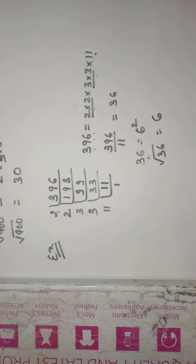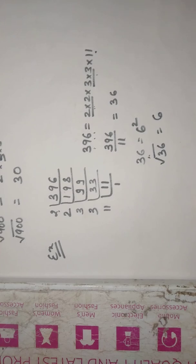So you just try the exercise question by yourself and find out the smallest number which should be multiplied or divided to make a number a perfect square. All right.